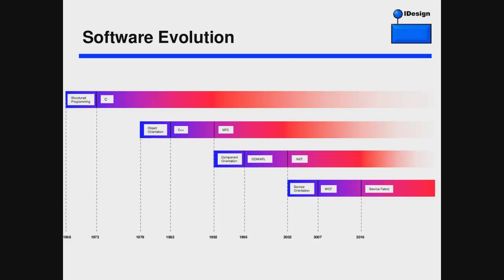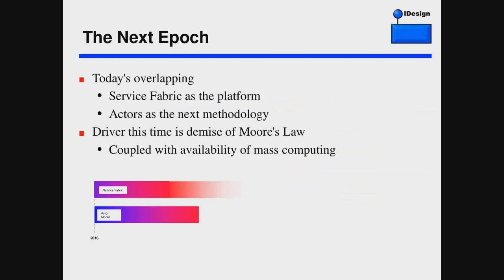If you lay it out on a timeline, here's what the big cycles in software have looked like so far. In the late 60s we started doing structured programming on assembly. C appeared in the 70s. In the late 70s we had the object-oriented cycle, then C++ in the 80s, MFC as a platform in the 90s. But then we realized components are better than objects. COM appeared with ATL in 96, .NET as a platform in 2002. Then WCF appeared in 2007, and last year Service Fabric appeared as a platform for services. Today's overlapping is clearly Service Fabric as a platform with ACTOR as the new methodology.